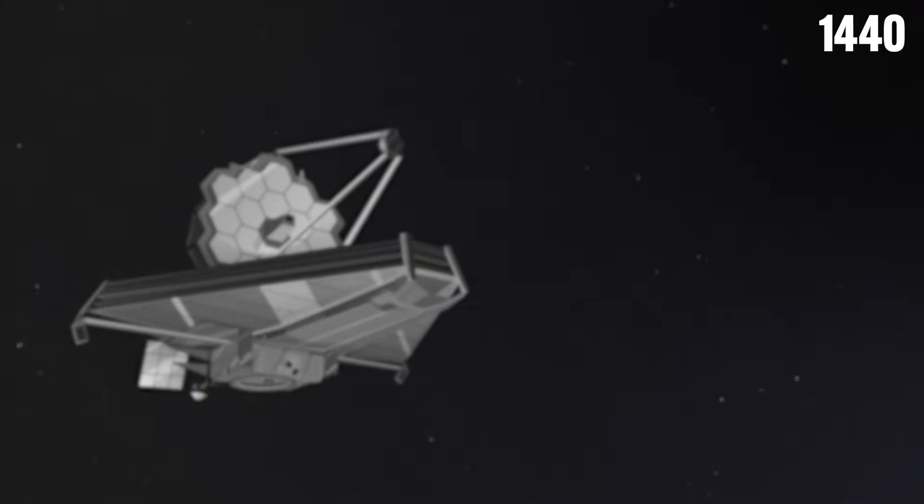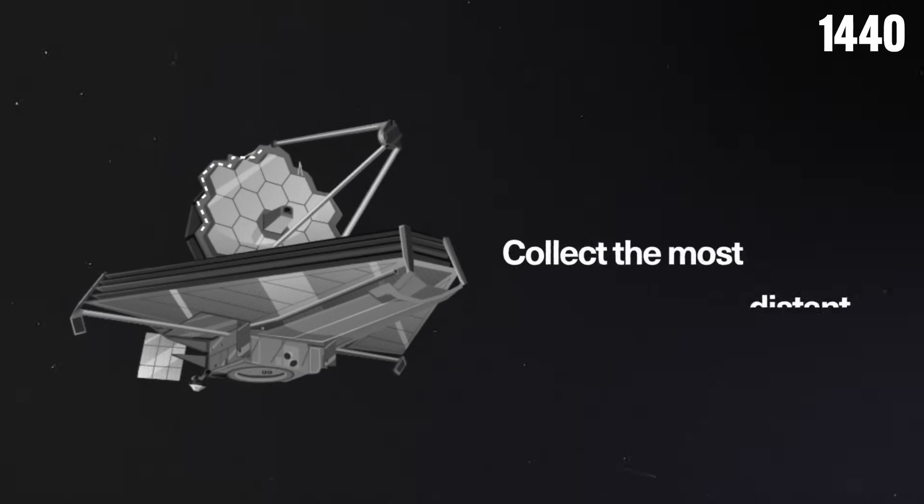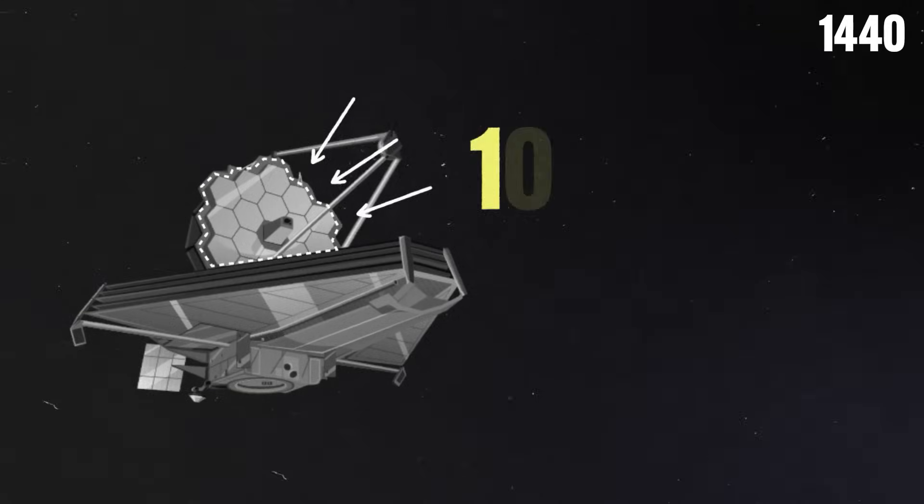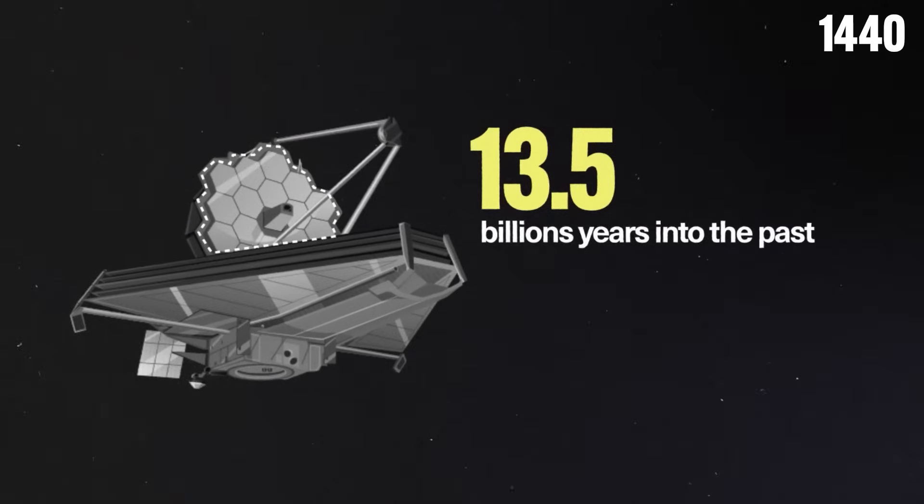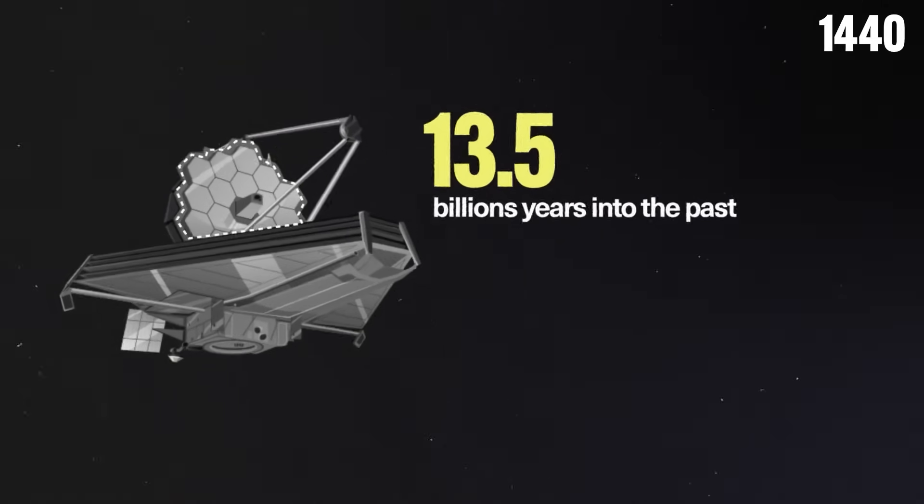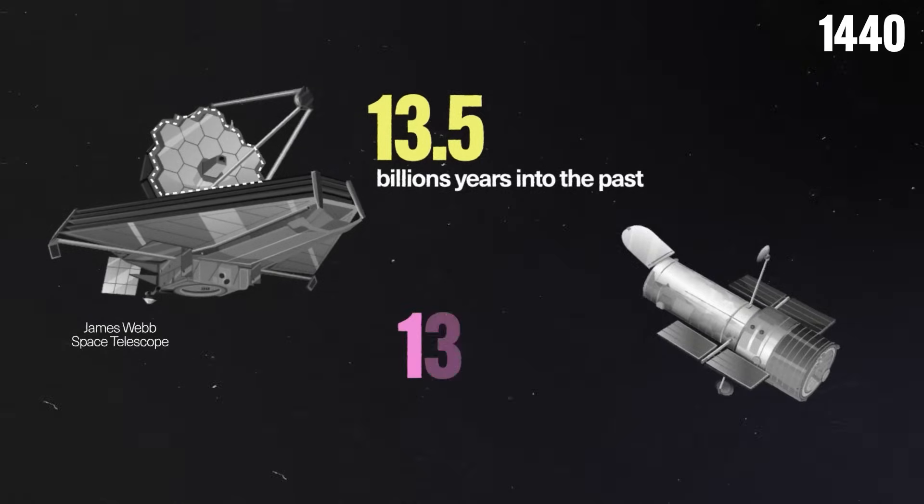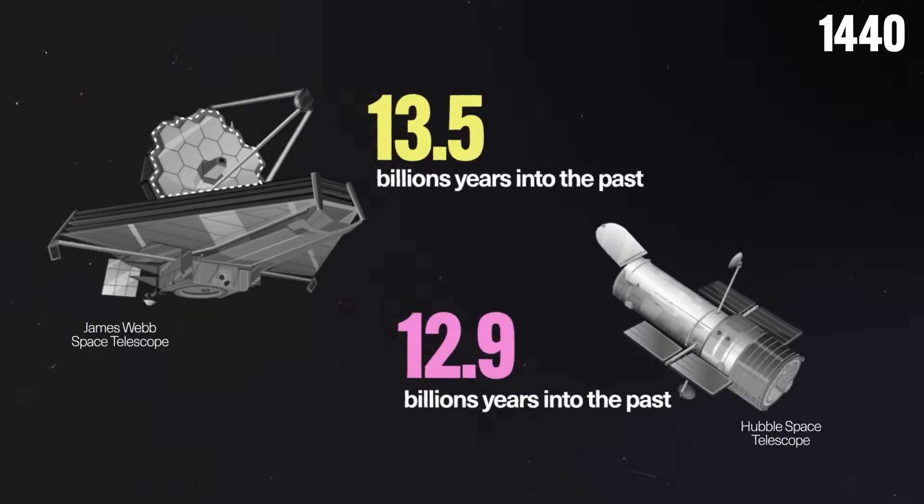The Webb telescope is designed to collect the most distant light detectable, allowing it to see nearly 13.5 billion years into the past, which is roughly 3 billion years more than its predecessor, the Hubble Space Telescope.